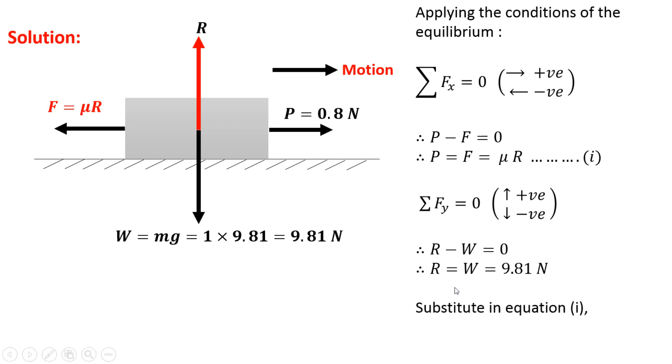Now substitute this value of R in equation 1, so we will get the value of force of friction. So F is equal to mu R. Mu is 0.1 and R is 9.81. So answer is F is equal to 0.981 N.